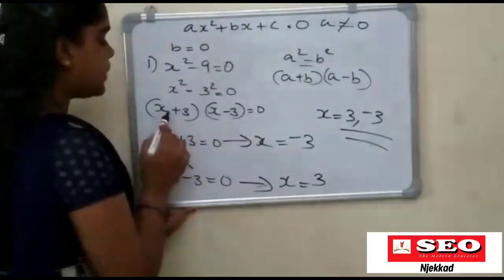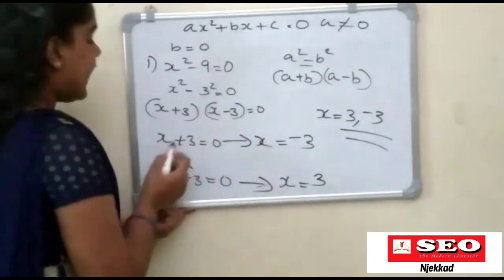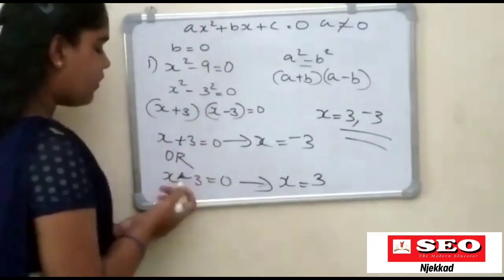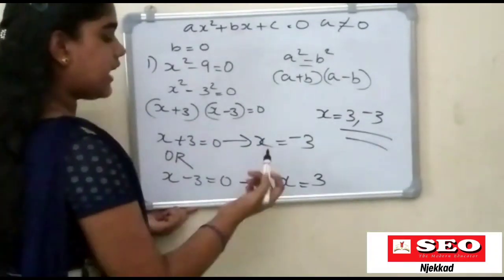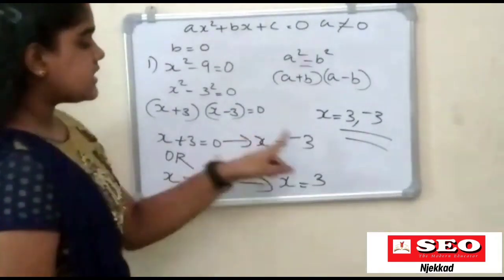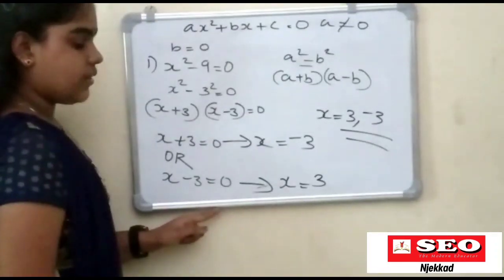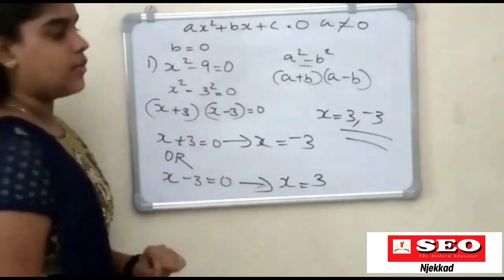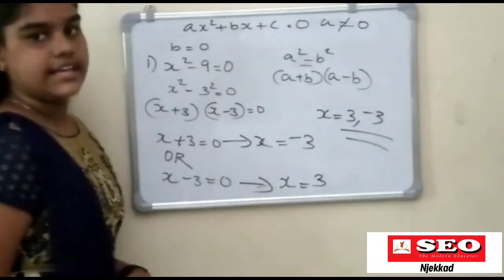Now we are going to substitute: x plus 3 is equal to zero, or x minus 3 is equal to zero. For x plus 3 equals zero, x is equal to minus 3. For x minus 3 is equal to zero, therefore x is equal to 3. So x equals minus 3 and minus 3.